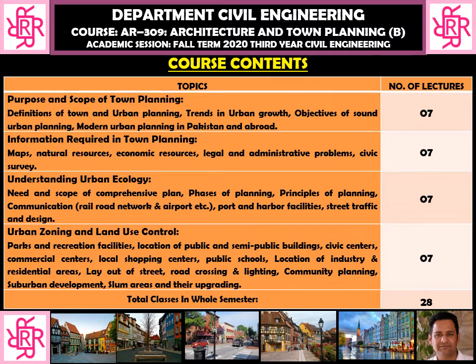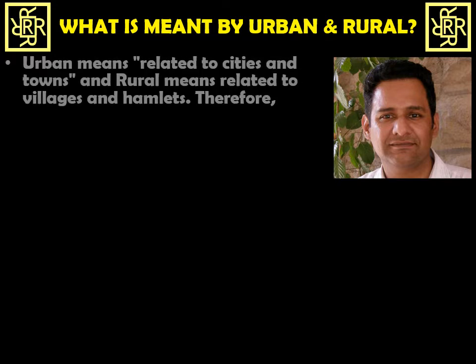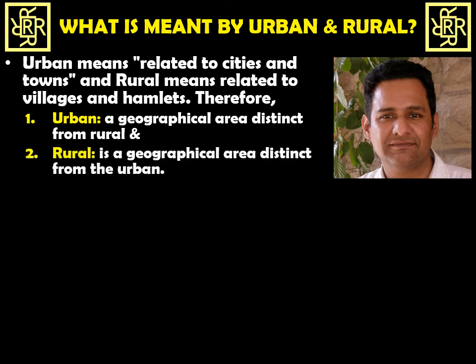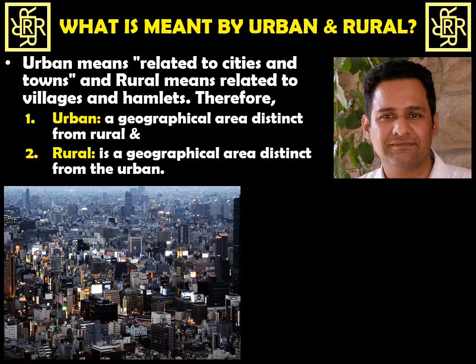First of all, you must know what is meant by urban and rural. Urban means related to cities and towns, and rural means related to villages and hamlets. The urban is a geographical area distinct from rural, and rural is a geographical area distinct from the urban. Looking at an image, you can see how buildings are grouped together — because land is less and built-up area is more. The major characteristic of an urban area is that the built environment is composed of so many built-up structures.